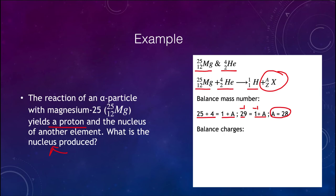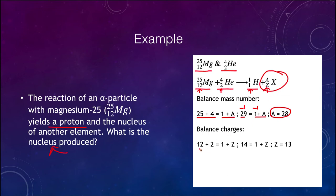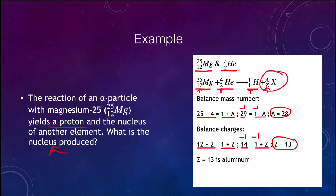Next, we balance the charge by looking at the subscripts. We had 12 positive charges from magnesium and 2 from helium, and on the products side we have 1 from hydrogen and Z unknown. So 12 plus 2 equals 1 plus Z, meaning 14 equals 1 plus Z, and Z equals 13. That gives us the atomic number of this element. Looking at a periodic table, atomic number 13 is aluminum.